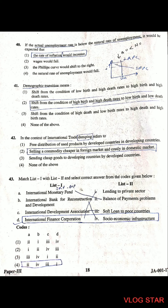Question 43: Match the following international financial institutions. IMF deals with balance of payment problems. International Bank for Reconstruction and Development deals with socioeconomic infrastructure. International Development Association gives soft loans to poor countries. International Finance Corporation deals with lending to the private sector. The correct matching is A-2, B-4, C-3, D-1.